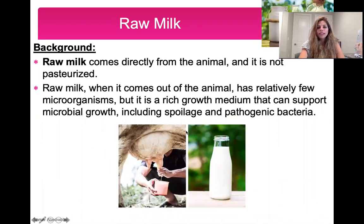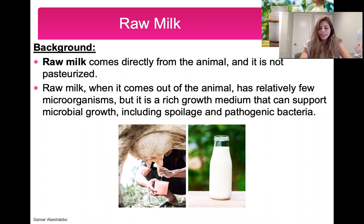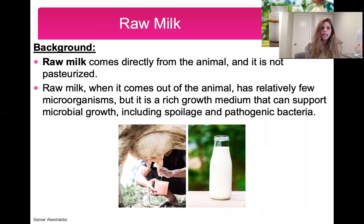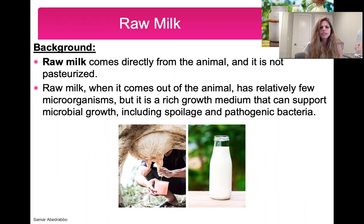Raw milk comes directly from the animal — nothing has been done to it, straight from the cow or any other animal that gives milk. When it comes out from the animal, it has very few microbes in it, but it's such a rich nutritious source that it can easily and quickly grow microbes. That's why we're really worried about pathogenic bacteria, which are bacteria that cause disease, or spoilage bacteria, which are bacteria that basically ruin food.